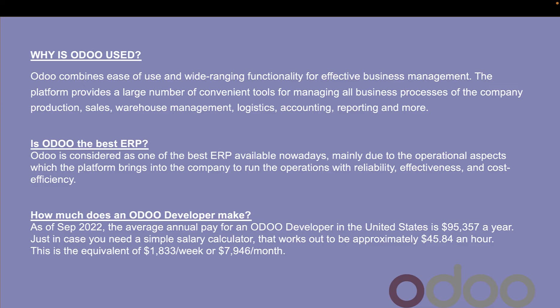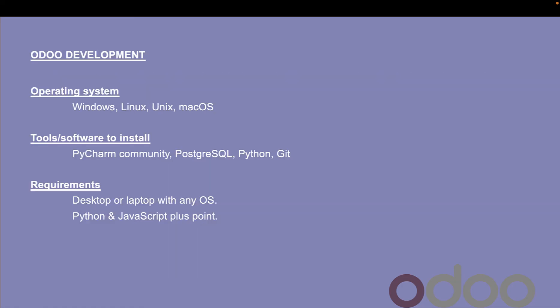As of September 2022, the average annual pay of an Odoo developer in the US is $95,357 per annum. Calculated on a shorter basis, that works out to around $45 per hour, $1,833 per week, or $7,946 per month.